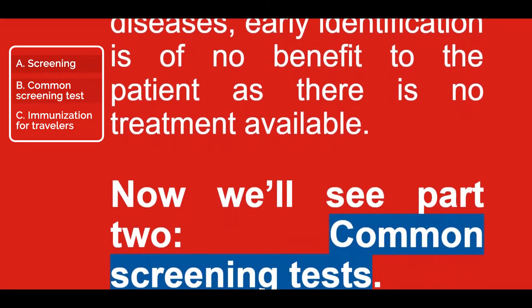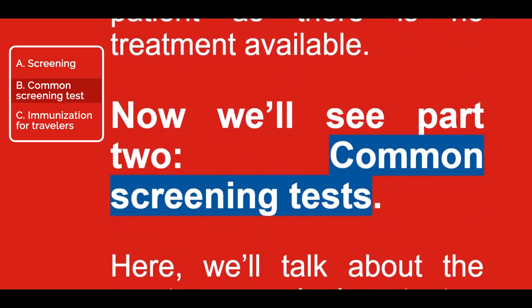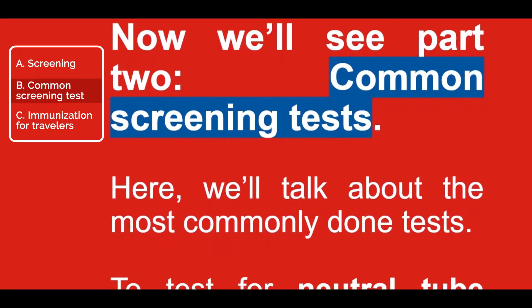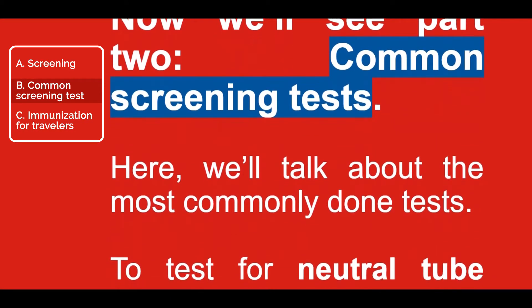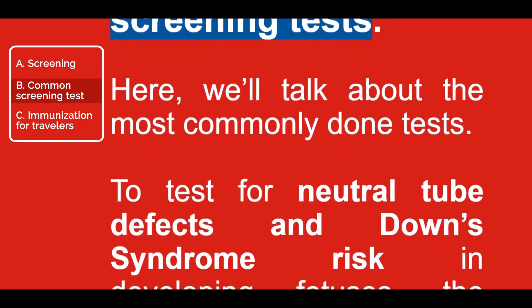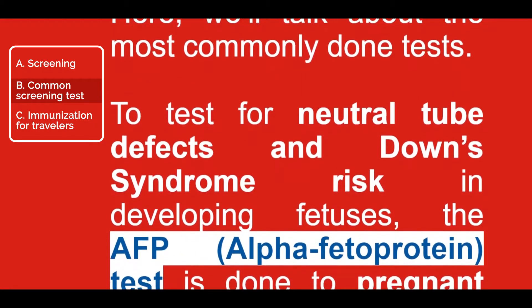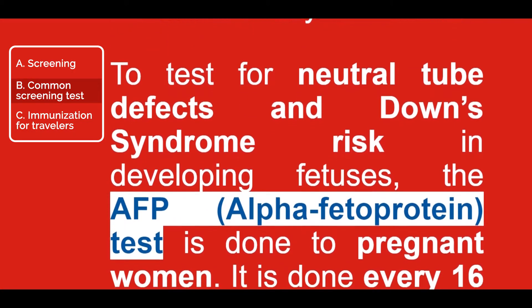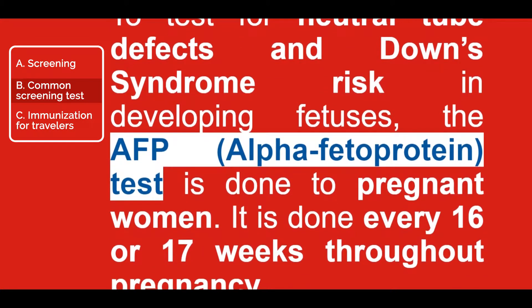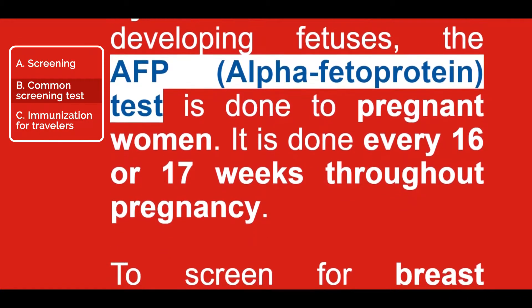Now we'll see Part 2, common screening tests. Here we'll talk about the most commonly done tests. To test for neural tube defects and Down syndrome risk in developing fetuses, the AFP alpha-fetoprotein test is done to pregnant women. It is done every 16 or 17 weeks throughout pregnancy.